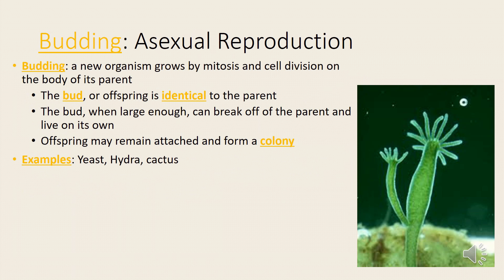Another example of asexual reproduction is budding. A new organism grows by mitosis and cell division on the body of its parent. The bud, or offspring, is identical to the parent. When large enough, the bud can break off the parent and live on its own. Offspring may remain attached and form a colony.